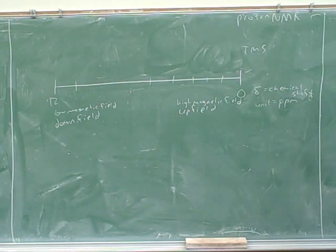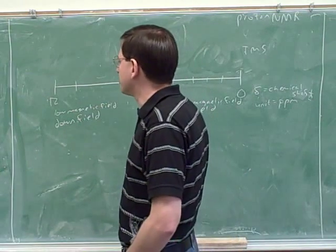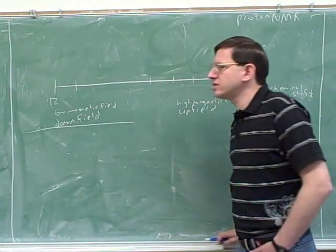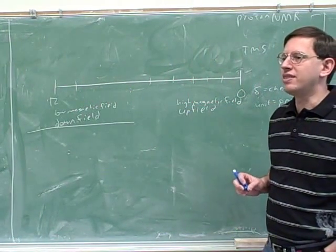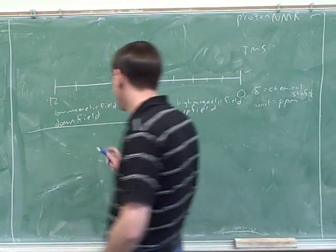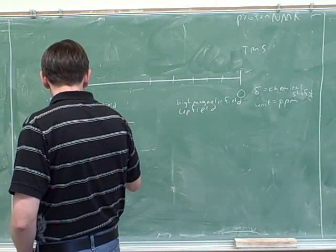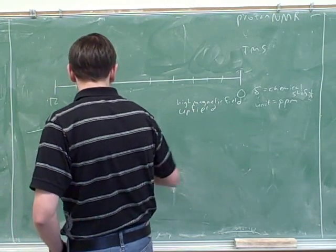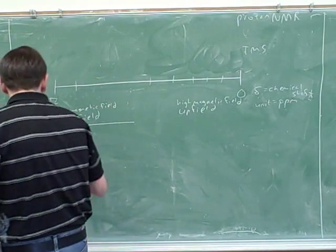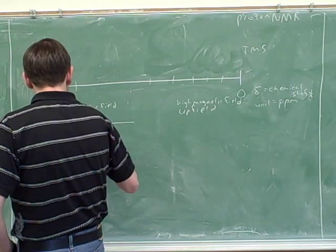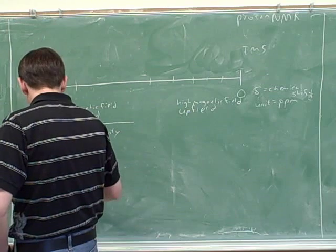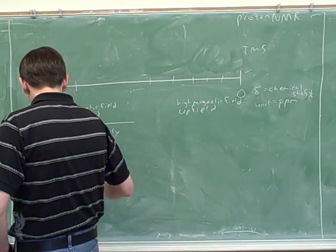The first thing we should figure out is how many peaks there are going to be in a molecule. The first principle is: if hydrogens have the same connectivity, then they're going to have the same peak — they're going to be equivalent.